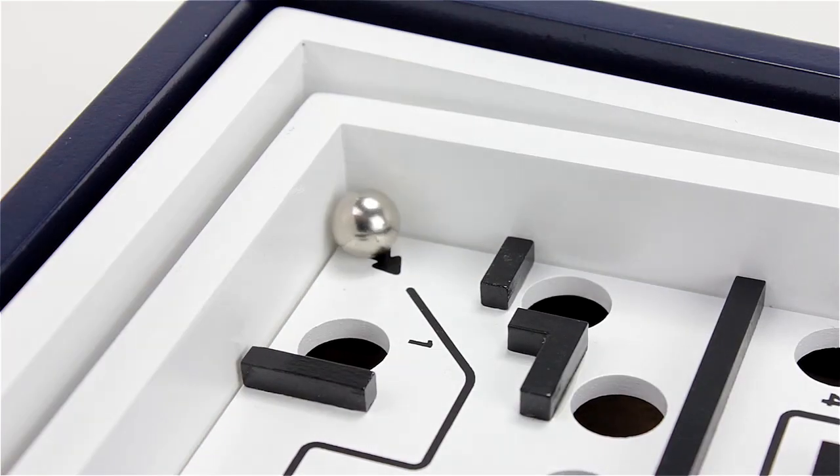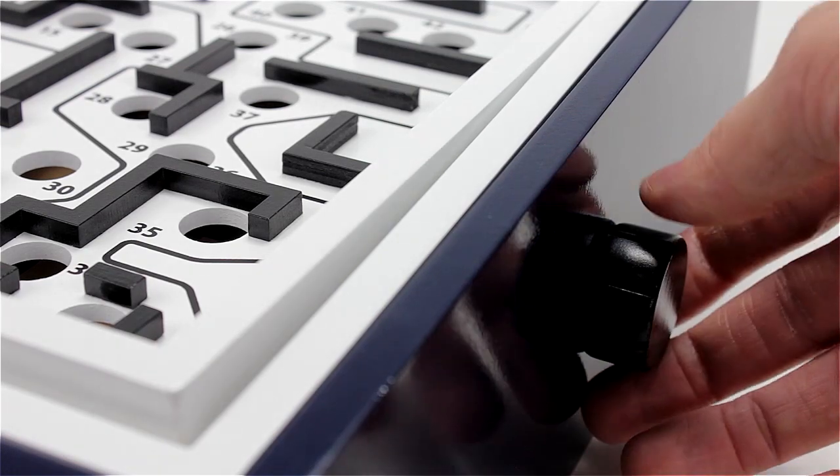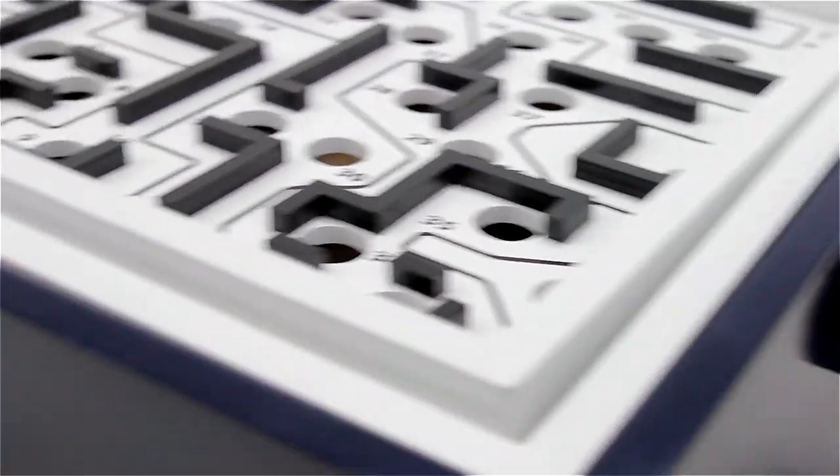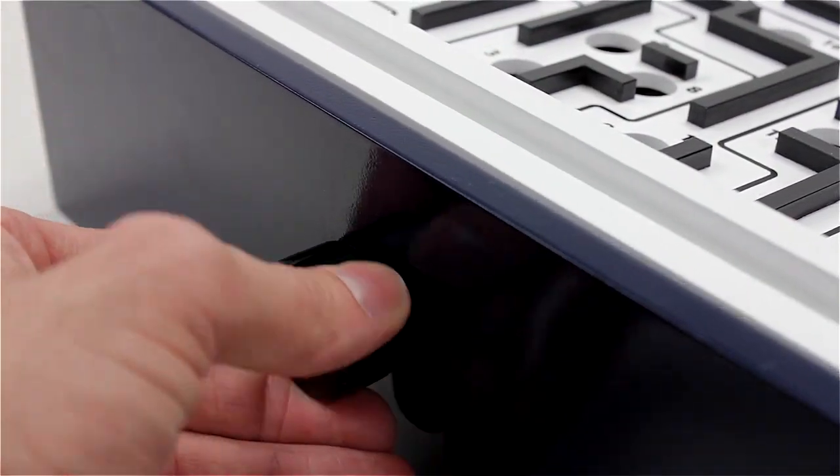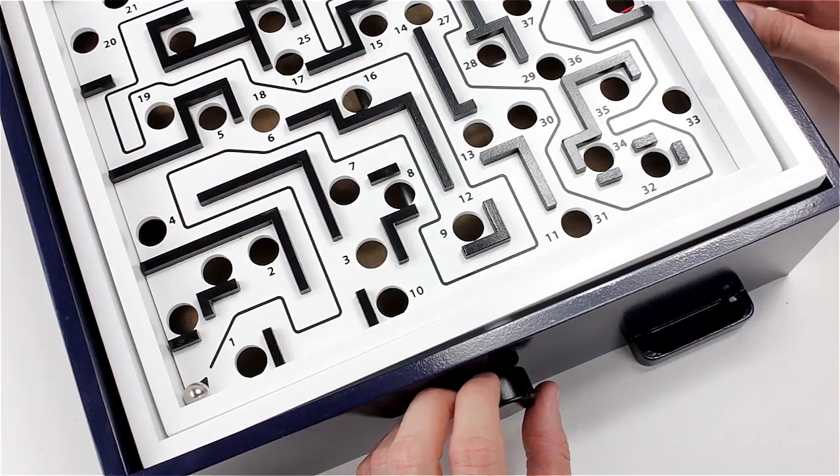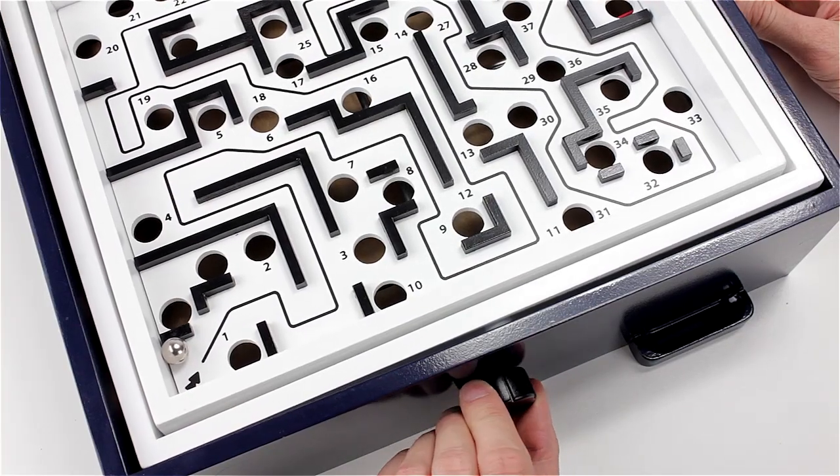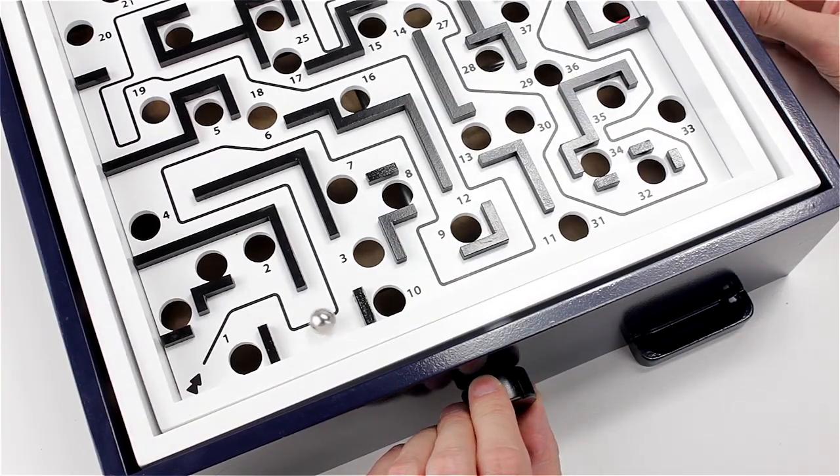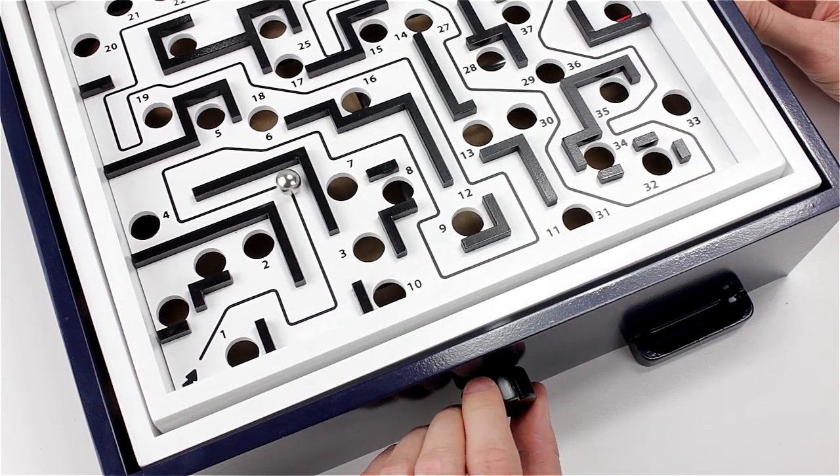You start off by placing one of the marbles on the board in the start position. Then you use the knobs to tilt the board forwards or backwards, or left or right. The idea is that you're trying to navigate the marble through the maze without letting it drop through one of the holes.